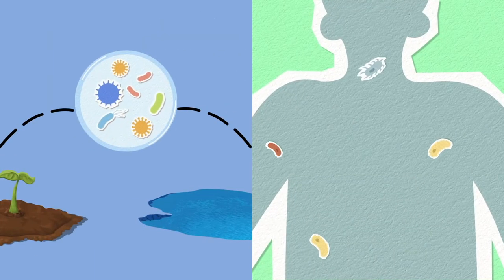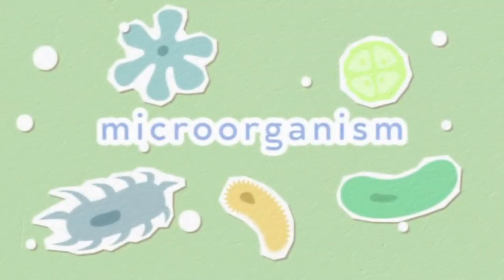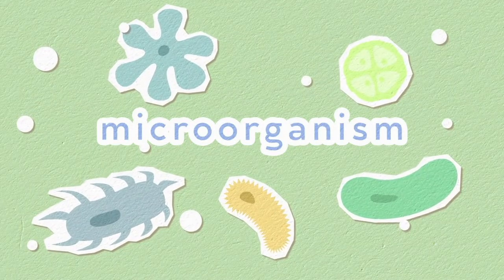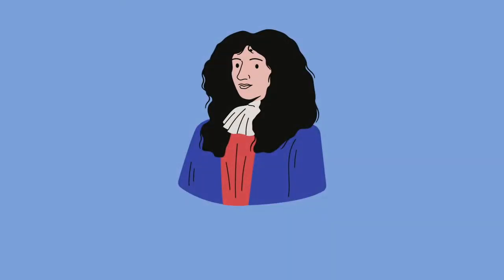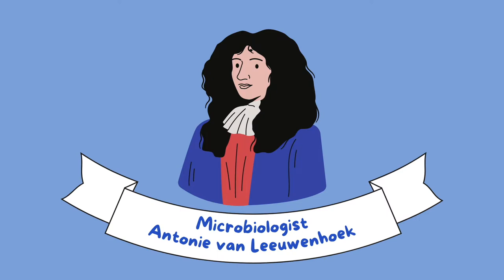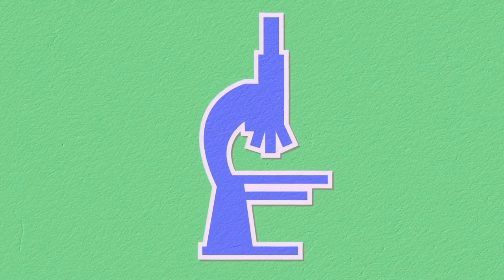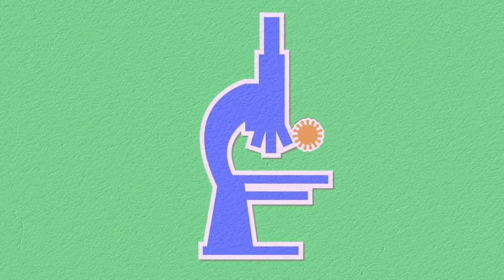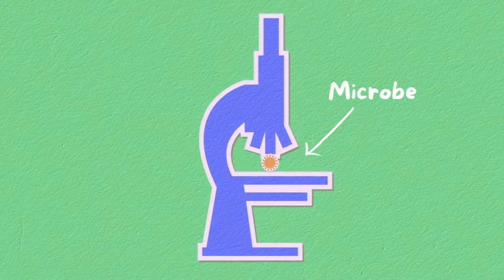All around us and even within us, there exists a tiny world of microorganisms invisible to the naked eye. In the 1670s, a microbiologist named Anthony van Leeuwenhoek pioneered the use of microscopes made from different lenses to observe microbes.